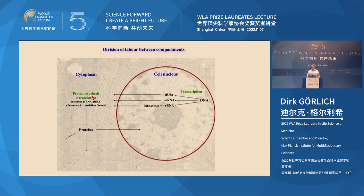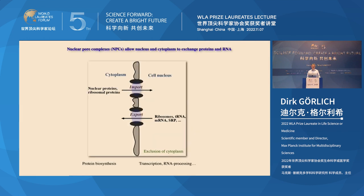This appears to be a complicated process, but it has advantages that allow the cell to control how genes are expressed. For this to function, we need transport processes. The nucleus is surrounded by a double membrane called the nuclear envelope, which is not permeable to any protein or RNA. For exchange, there are nuclear pore complexes that provide channels between compartments. Every protein the nucleus ever needs is initially made in the cytoplasm and must be imported through the nuclear pore complexes, and conversely the nucleus exports ribosomes and RNA to the cytoplasm. We are interested in how this cellular logistics is organized.